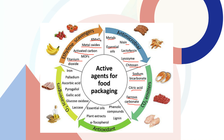In oxygen scavengers, oxygen gas is absorbed — mainly through the use of iron dust, which has a higher surface area that absorbs oxygen more easily and inhibits the growth of aerobic microorganisms. Antioxidants such as alpha-tocopherol and essential oils are also used to reduce the oxidation rate of food products.